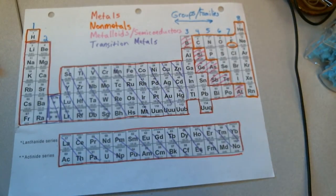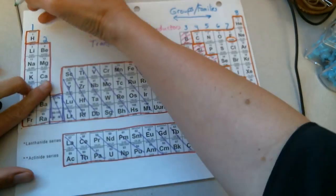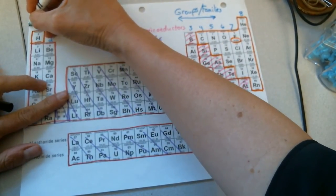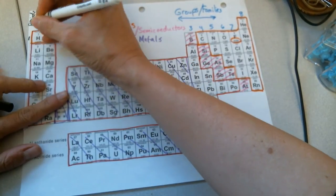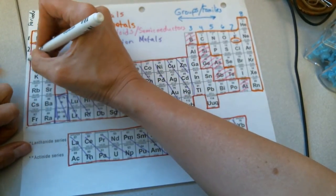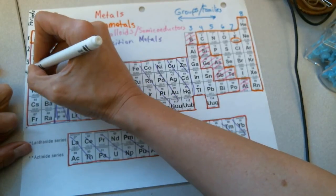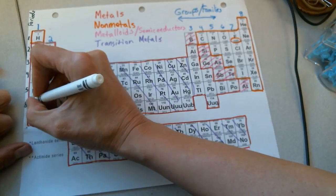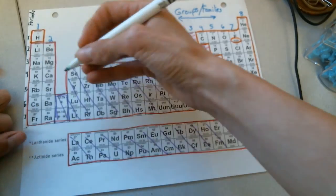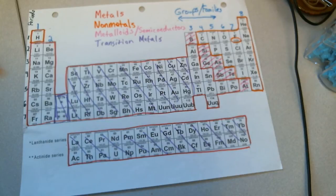We also have periods of the periodic table. The periods are labeled from the top to the bottom of the main section of the periodic table. I'm going to label the periods over here on the left. So the periods, you can start with the number 1 next to the hydrogen, 2 next to the lithium, 3 next to the Na, 4 next to the K, 5 next to the Rb, 6 next to the Cs, and 7 next to the Fr. So those are periods.